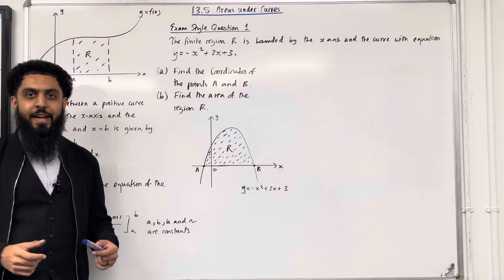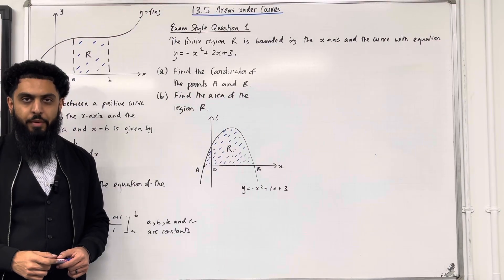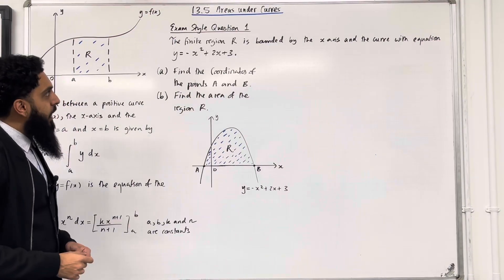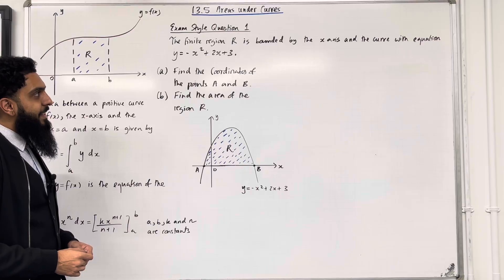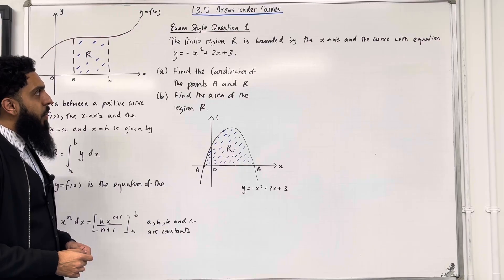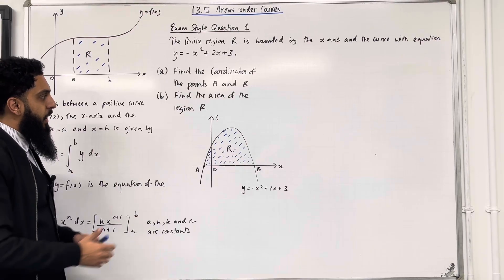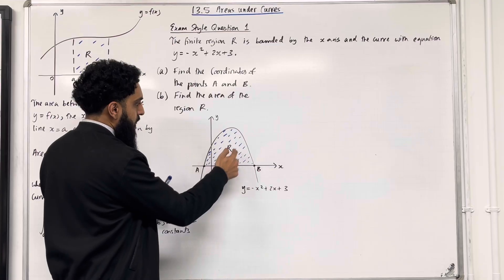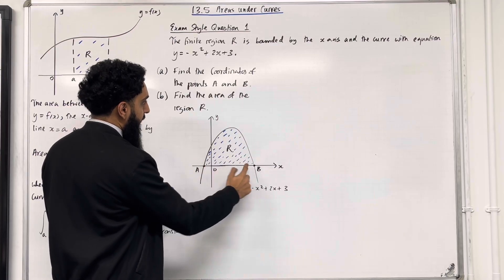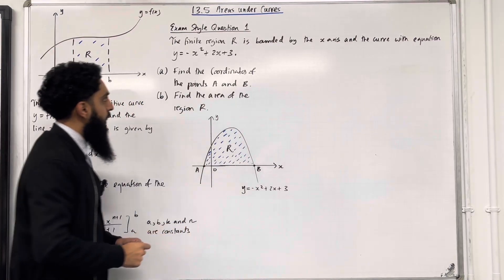Let's have a look at exam-style question 1. The finite region R is bounded by the x-axis and the curve with equation y = -x² + 2x + 3. Here is the diagram. The region R is bounded by the curve and the x-axis.